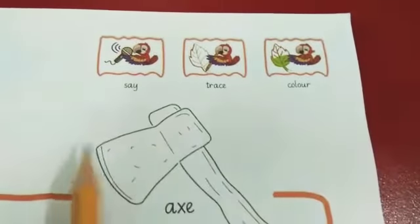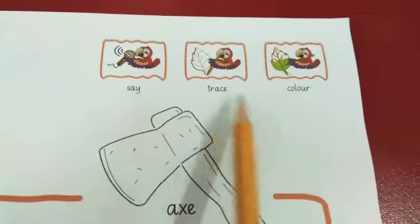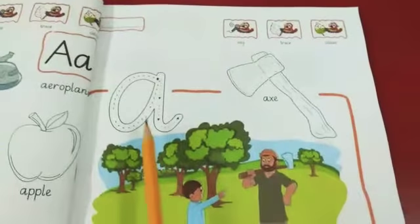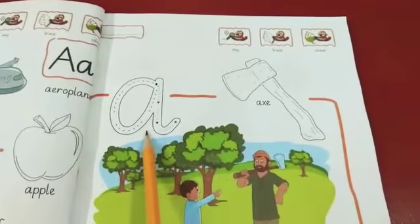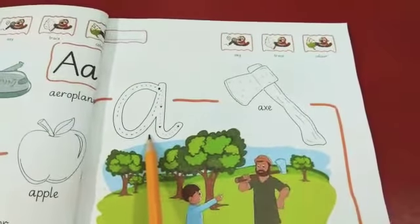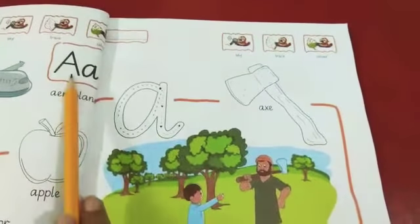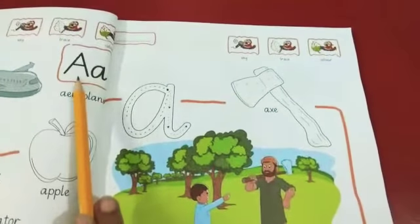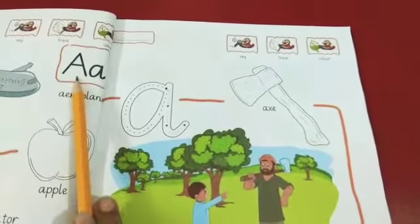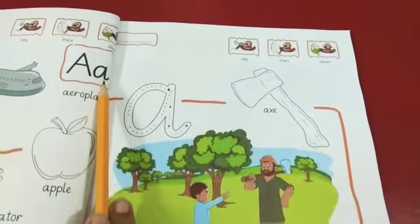Say, trace, color. Say, trace, color. Which sound is this? A. Which sound is this? A. The name of the letter is A. The sound of A is A. The name of the letter is A, the sound of A is A.